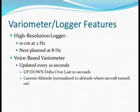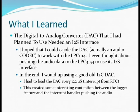The features of the variometer logger include a high-resolution logger — 10 centimeters at 2 Hz, as I mentioned. The next planned variation will be 8 Hz. The voice-based variometer is updated every 10 seconds, giving an up/down delta change over the last 10 seconds and also indicating the current altitude.